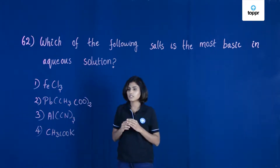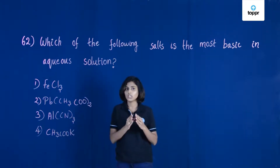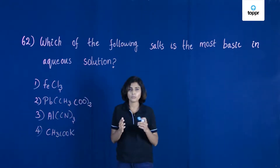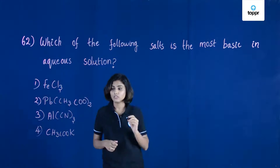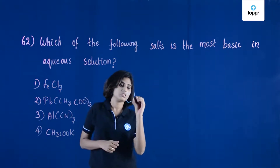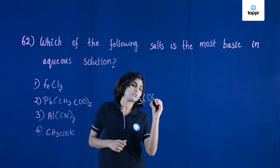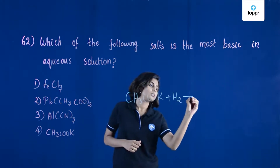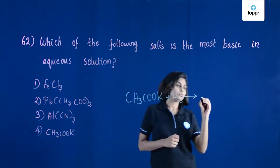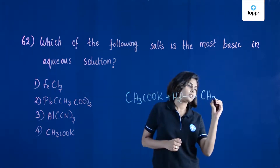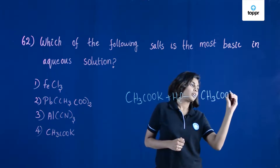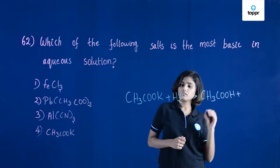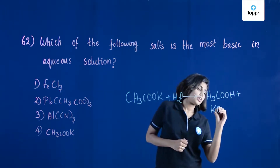Out of all of these, CH3COOK is the salt of a weak acid and strong base. So, in aqueous solution, this following reaction takes place: CH3COOK and water gets dissociated to the weak acid CH3COOH plus the base KOH.